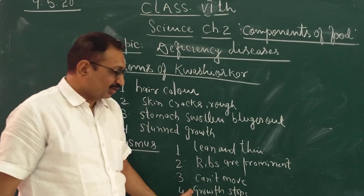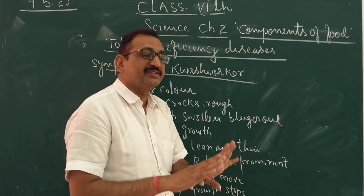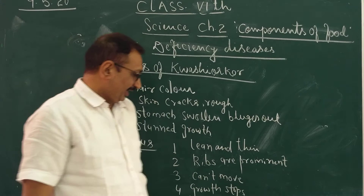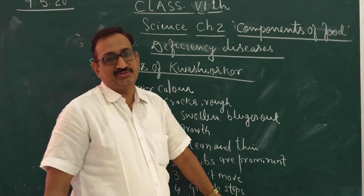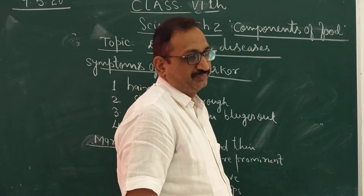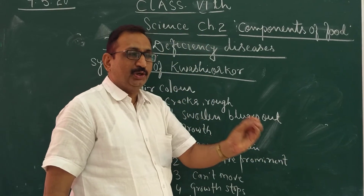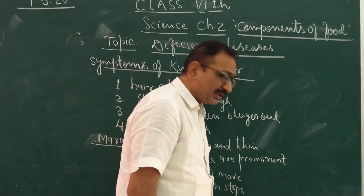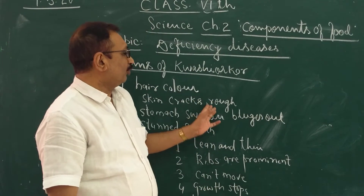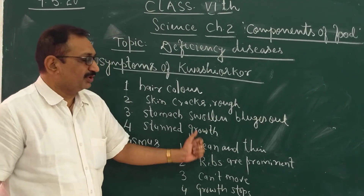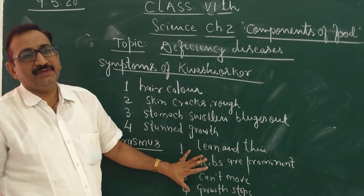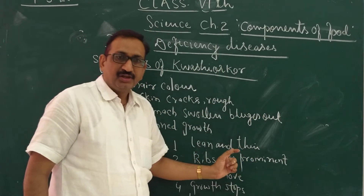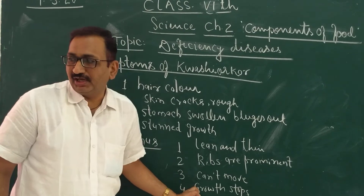After that, their growth stops — there will be no development in the body. And finally, weight loss: the weight becomes very low, below 7 to 10 kg. So these are the prominent symptoms you can see as features of Marasmus, which is due to the lack of carbohydrates as well as protein.